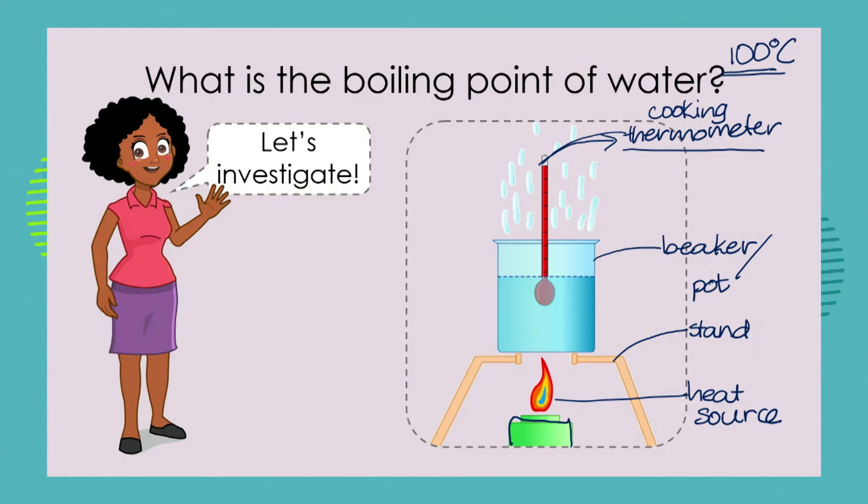So how would you do this investigation? You would take your beaker or pot and fill it up with water from the tap. Put it onto your heat source and place the thermometer into the water. Turn on the heat source and wait until the water starts to move and to bubble. All the time you can be recording the temperature of the water on the thermometer. I would also suggest using oven gloves or mitts to prevent yourself from burning.